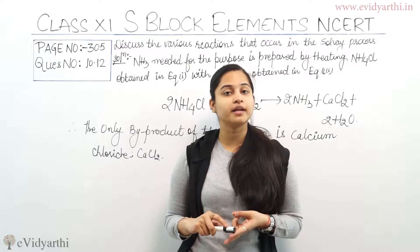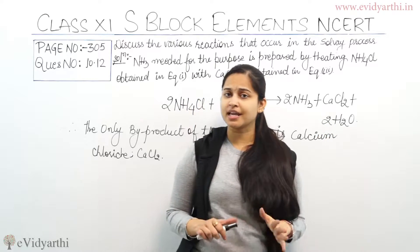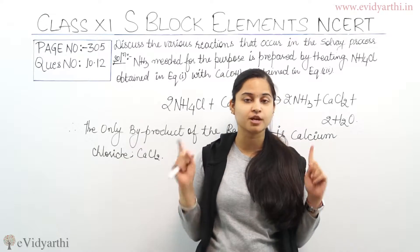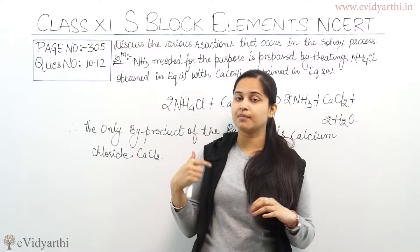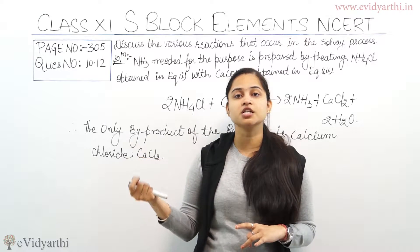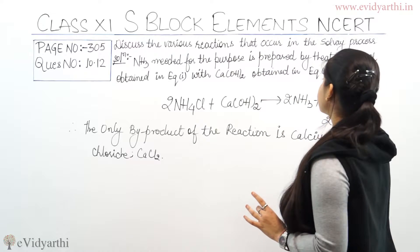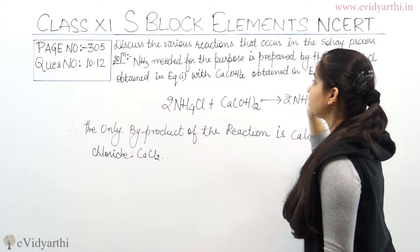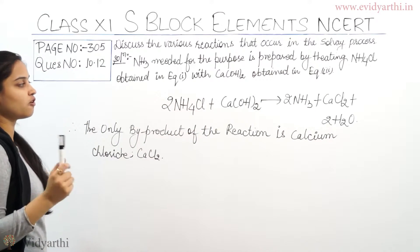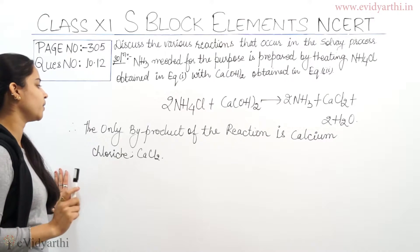We get ammonia, calcium chloride, and water. In the whole Solvay process, the only by-product is calcium chloride. The ammonia needed for the process is prepared by treating ammonium chloride with calcium hydroxide. The reaction is: 2NH4Cl + Ca(OH)2 → 2NH3 + CaCl2 + 2H2O. So the only by-product of the reaction is calcium chloride, CaCl2.